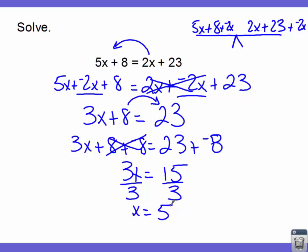15 divided by 3 is 5. If I were to plug this 5 back in: 5 times 5 is 25, plus 8 gives us 33. And 2 times 5 is 10, plus 23 is also 33. So that tells me the answer is correct. That's how we do standard problems. Now let's look at some non-standard problems.